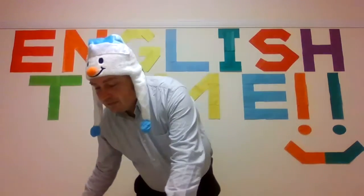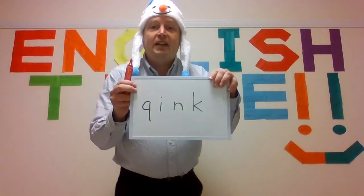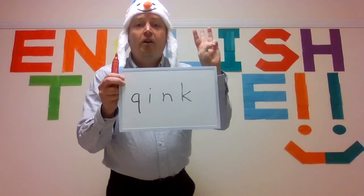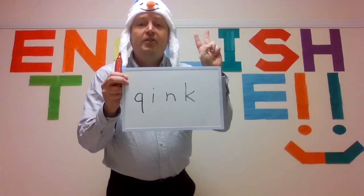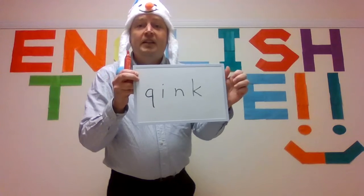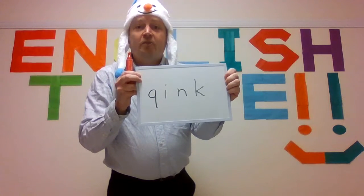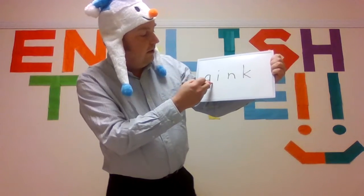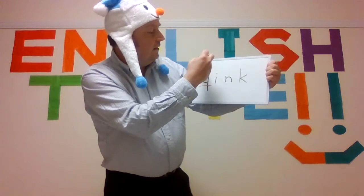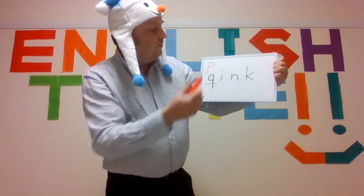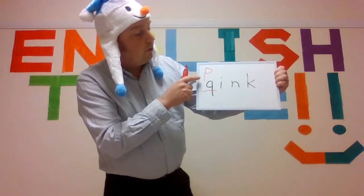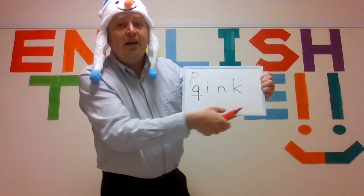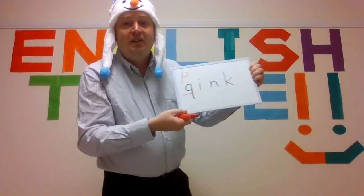The next one — pink. Five seconds: five, four, three, two, one. Did you find the wrong letter? The wrong letter is Q. You should have P. Let's spell together: P, I, N, K — pink. Very good.